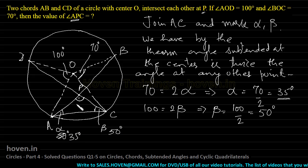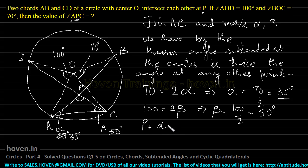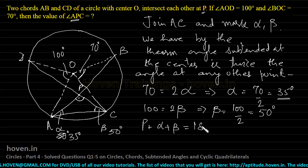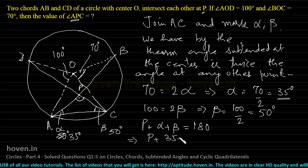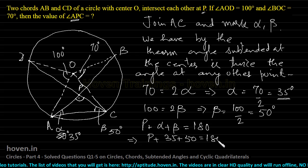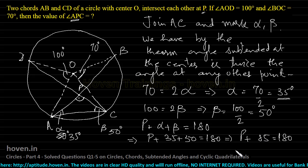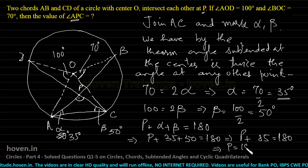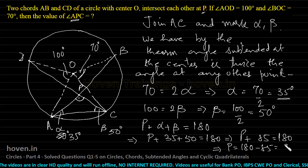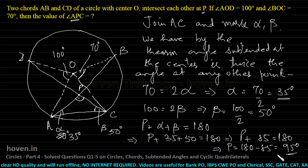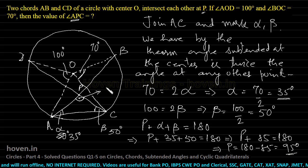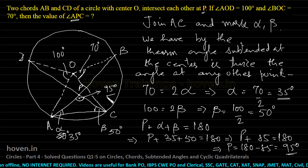Now, with this information I will be able to find out P. So, P plus alpha plus beta should be 180 degrees. This implies P plus 35 plus 50 equals 180, which implies P plus 85 equals 180, which implies P should be 180 minus 85, equal to 95 degrees. So, this angle APC should be equal to 95 degrees, which is the answer.